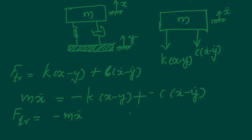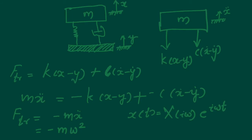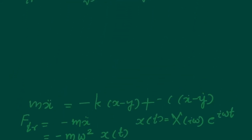We assumed x(t) takes a harmonic form, then computed the complex number x(iω) completely — both the magnitude and phase angle — so the complex number is fully defined. If you are doubtful about complex numbers, there is an optional video you can watch to brush up on those concepts before continuing.